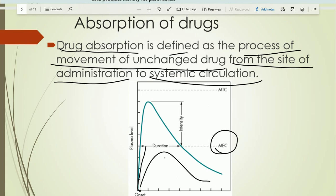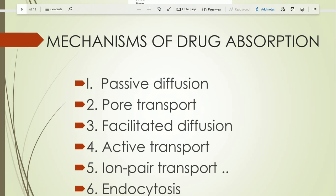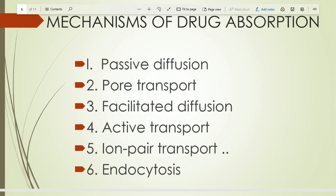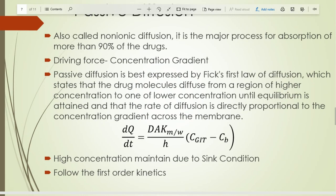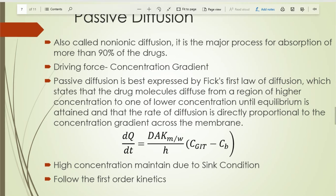Absorption means the permeation of the drug from the GI tract to systemic circulation. This permeation occurs by a variety of transport mechanisms. Mechanisms of drug absorption: passive diffusion, facilitated diffusion, active transport, ion-pair transport, and endocytosis. Facilitated diffusion and active transport are collectively called carrier-mediated transport mechanisms.